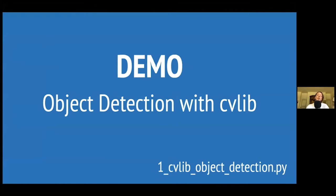We have to use a long-running process. With a long-running process, the first time we load OpenCV, CVlib, and YOLOv3 into memory, and then this process is ready to receive images and detect objects on the fly.